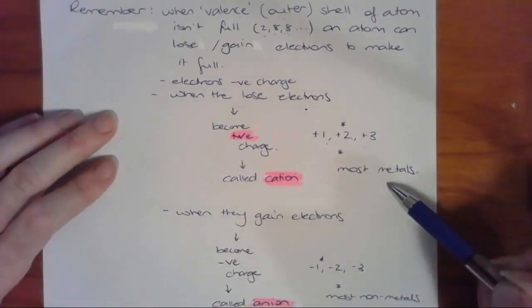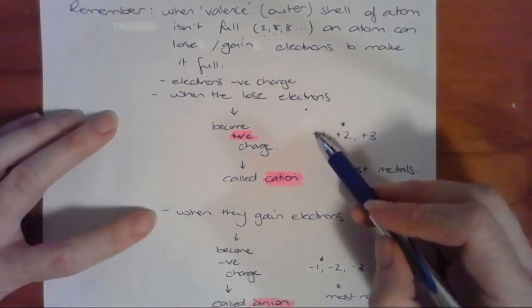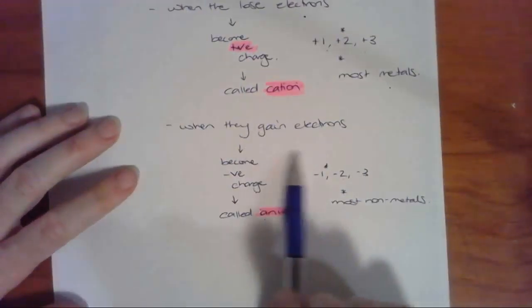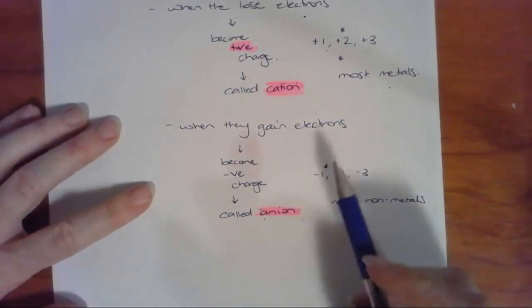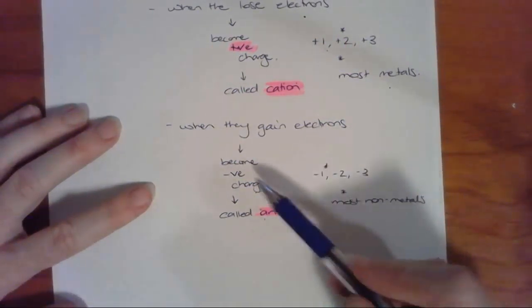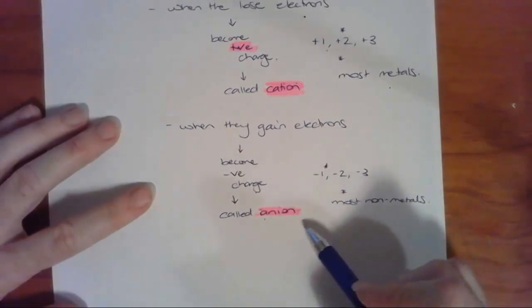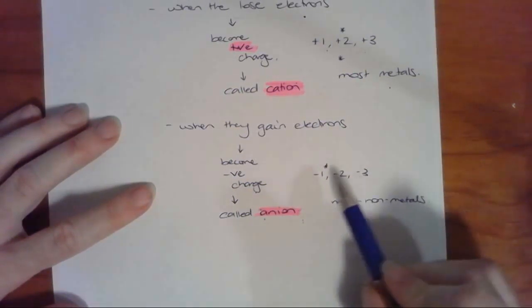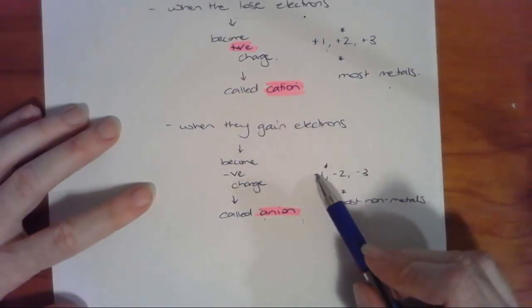When they gain electrons, if that's easier for them to do, because they're gaining things that are negative—the electrons—they then have an overall negative charge. And we call that an anion, again represented with numbers -1, -2, -3, and that's most non-metals.